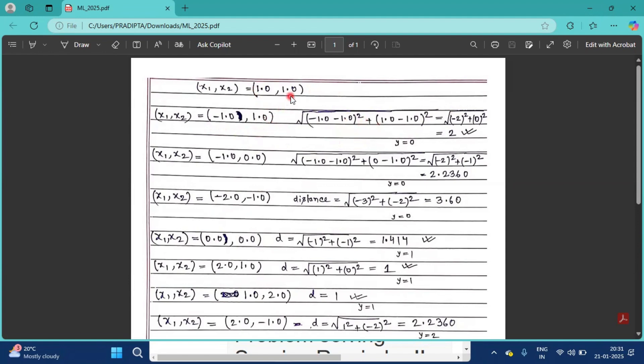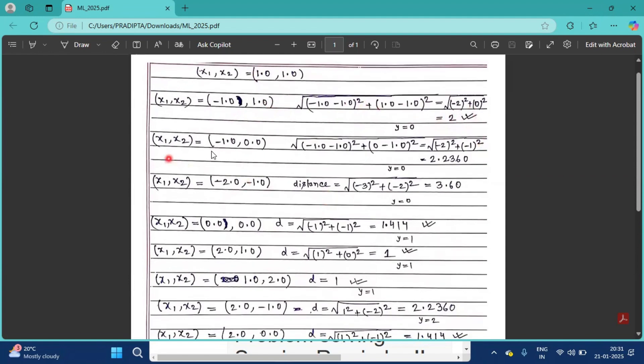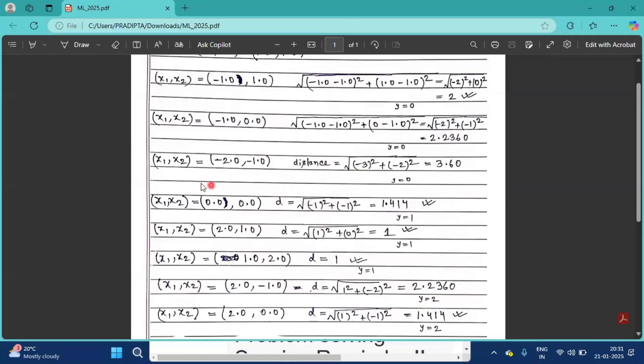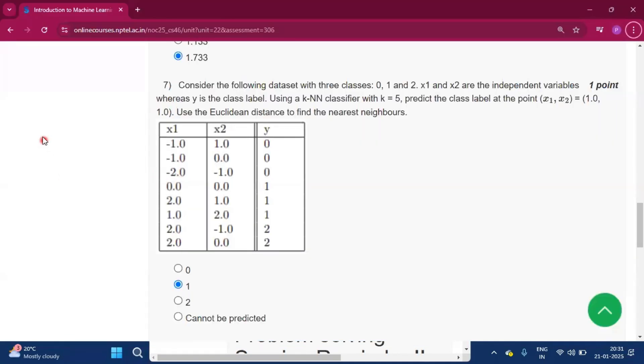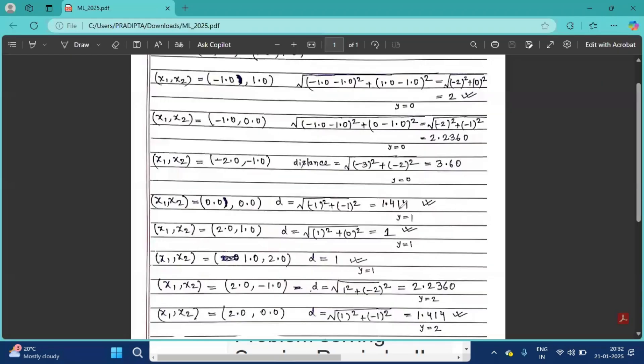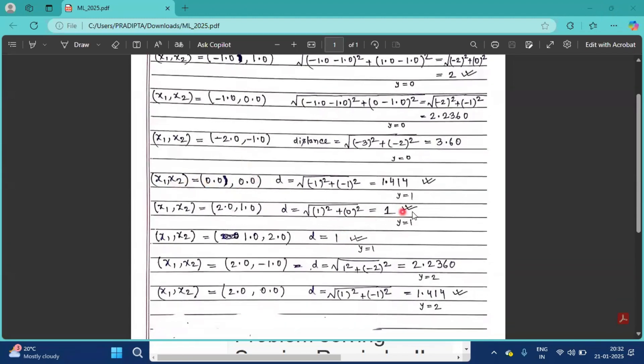Now we have to find the distance, so this formula we all know: minus 1.0 minus 1.0 whole square plus 1.0 minus 1.0 whole square, so we will get 2. Now for the second one we will get 2.2360. In the same way for the third data that is x1, x2 minus 2.0 and minus 1.0, this minus 2.0 and 1.0.